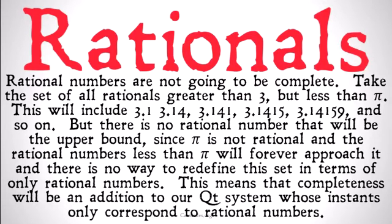Take the set of all rationals that are greater than 3 — we can define 3 in terms of rational numbers — but less than pi. Pi is what's called an irrational number, meaning pi itself cannot be expressed as a fraction or a ratio. Pi is not included in the rational numbers because it's a decimal that goes on forever and doesn't repeat, so there's no way to create a fraction of it. The set of rationals between 3 and pi includes numbers like 3.1, 3.14, 3.141, 3.1415, 3.14159, and so on.